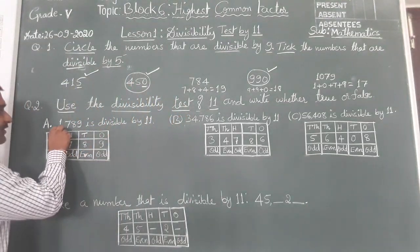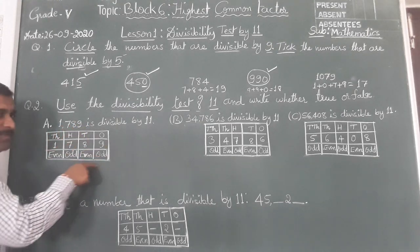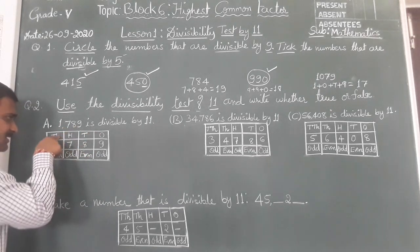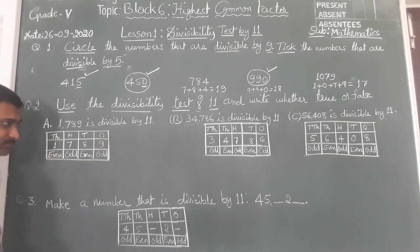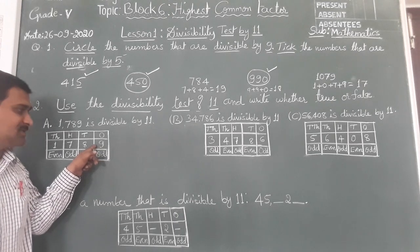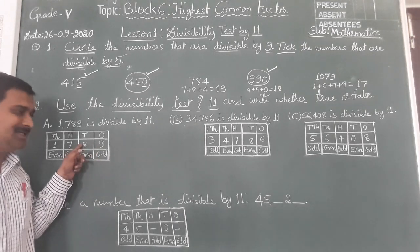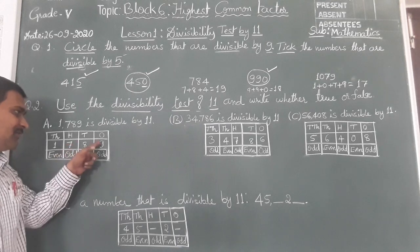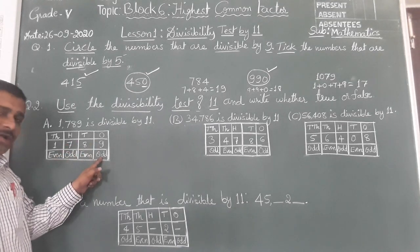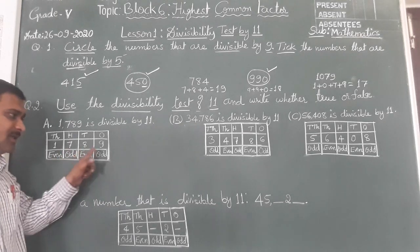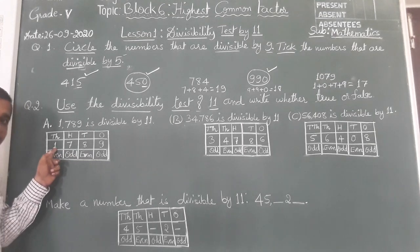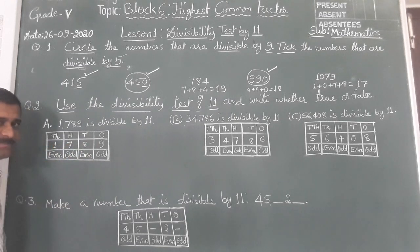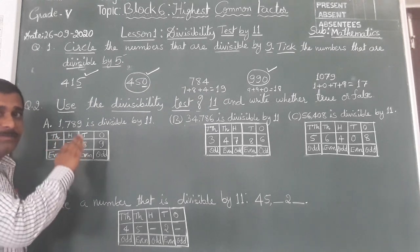1,789: write it in the place value chart. 9 is in the 1's place, 8 in the 10's place, 7 in the 100's place, 1 in the 1,000's place. 9 is in the 1st place — 1st is odd. 8 is in the 2nd place — 2nd is even. 7 is in the 3rd place — 3rd is odd. 1 is in the 4th place — 4th is even. Mark which are odd places and which are even places.